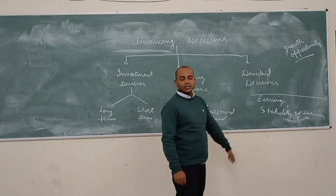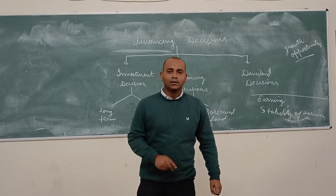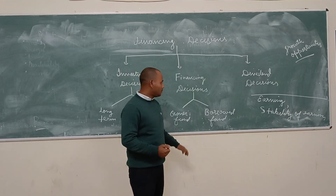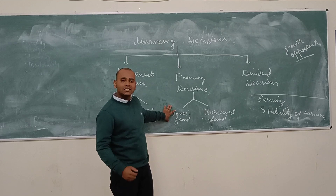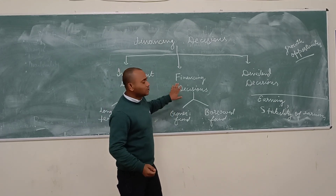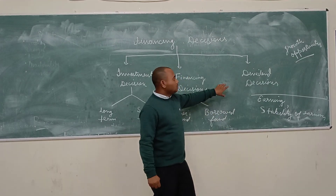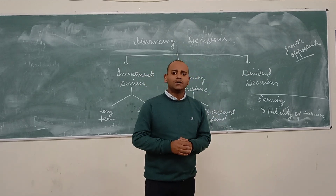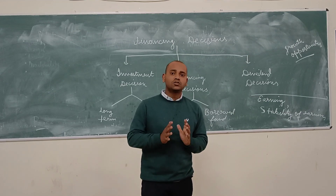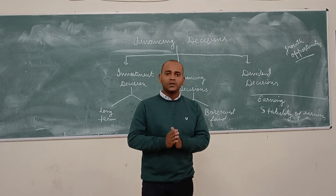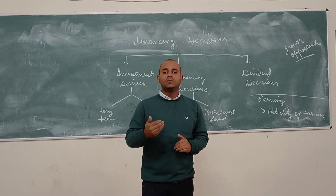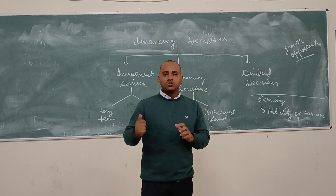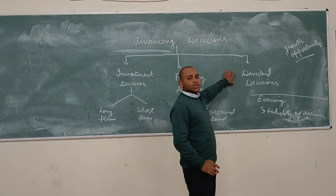The third and last is the dividend decision. Dividend decision means if you are earning money, how to distribute your money to the different people from where you have raised funds. For example, if you have raised money from owners fund — meaning you have given a part of your company or shares to someone — you have to give them a dividend. You have to take the decision related to sharing of profit. If you are earning one lakh rupees, you need to decide how much should be given to shareholders, venture holders, banks, and friends from where you collected the money.